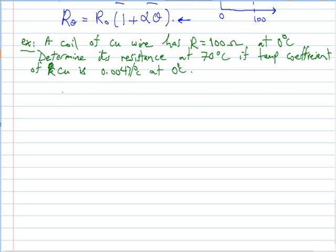So R₇₀ at 70 degrees will equal the initial resistance, which is at 0 degrees is 100, multiplied by 1 plus alpha, which is 0.0043, multiplied by the temperature which is 70 degrees. It will give 130.1 ohm.